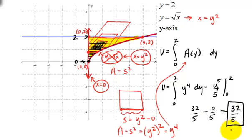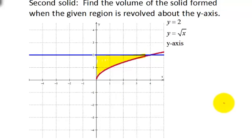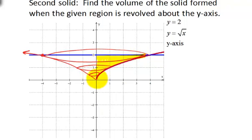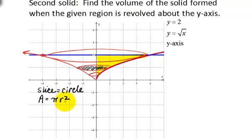Let's look at the next example using the same region. With the second solid, we're going to find the volume formed when the given region is revolved about the y-axis. We're going to take this region and swing it around so it rotates, giving us something symmetrical — a kind of inverted cone shape, but not a true cone because the sides are curved. Drawing a picture, these cross sections or slices are circles, so each area we're integrating is a circle. The area of a circle is pi r squared, so we need to figure out what the radius is.